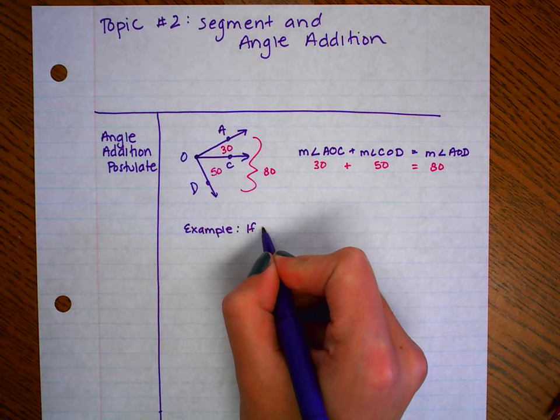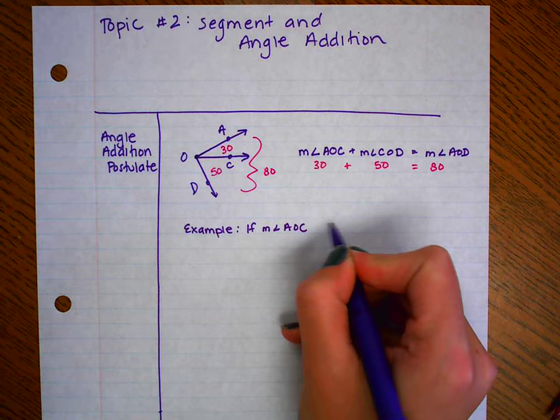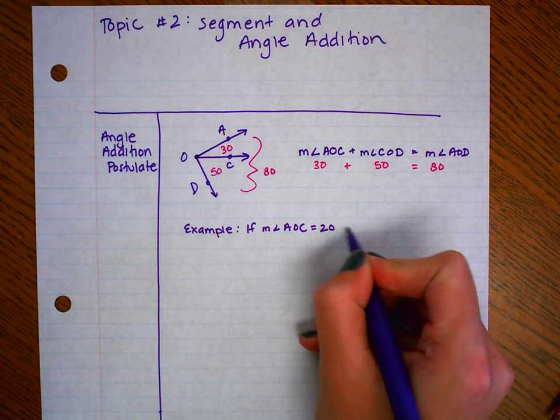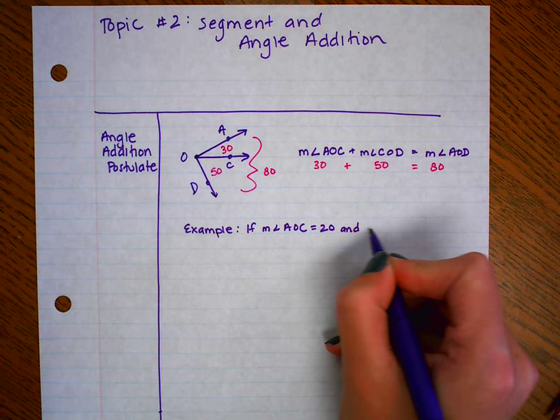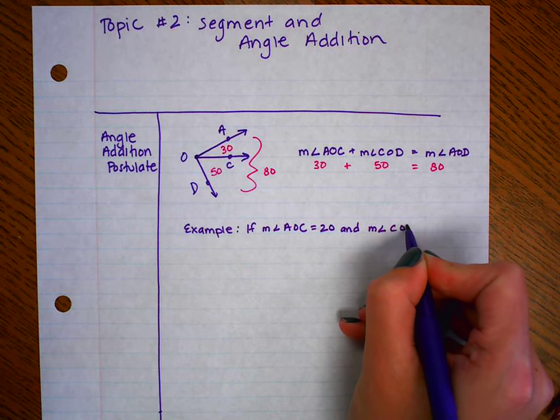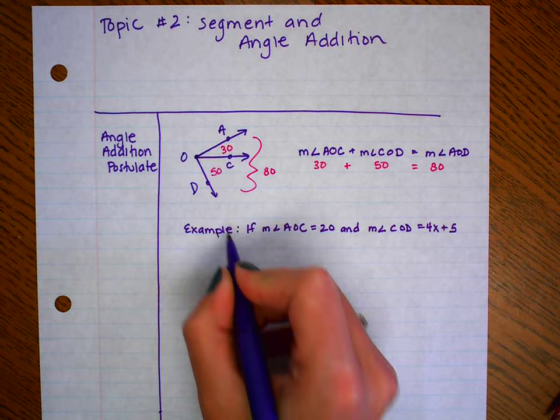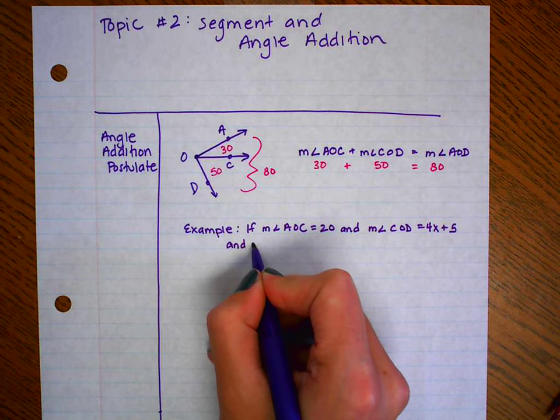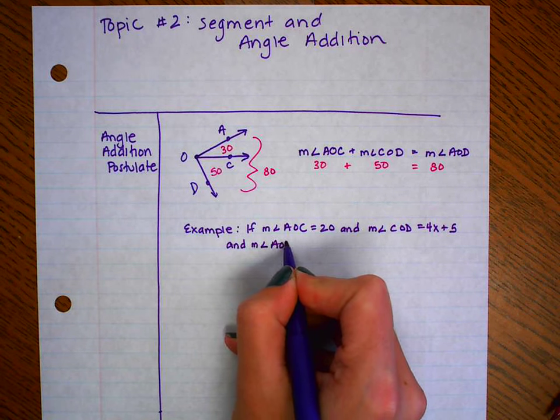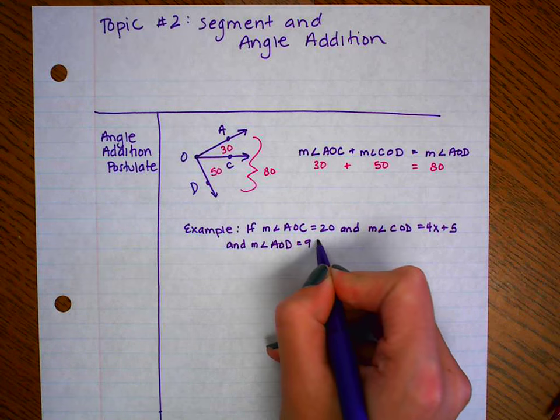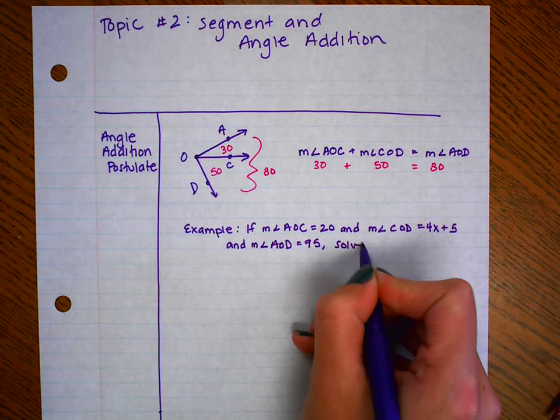If the measure of angle AOC equals 20, and the measure of angle COD equals 4X plus 5, and the measure of angle AOD equals 95, solve for X.